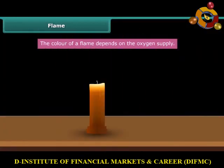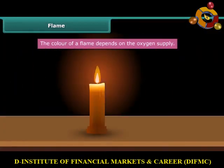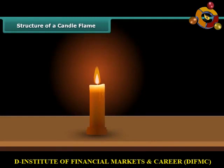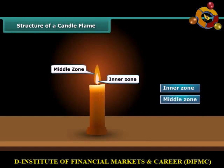When we burn a candle with a matchstick, the heat of the matchstick melts and vaporizes wax, which rises through the wick and forms a flame. A candle flame can be divided into three regions: the inner zone, middle zone, and outer zone.